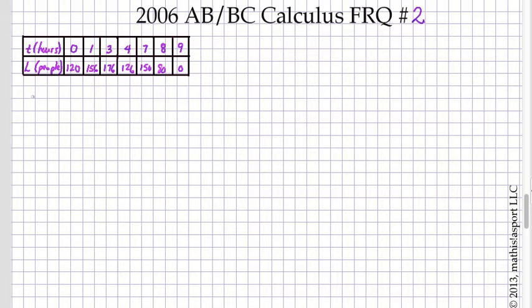So our first task is to estimate the rate at which the number of people waiting in line is changing. So how fast is the change in the number of people waiting in line? So they're asking us to find dL/dt.